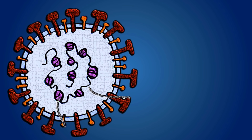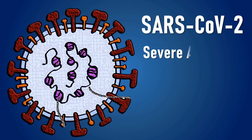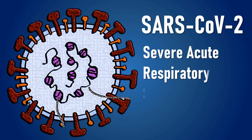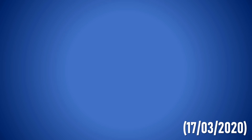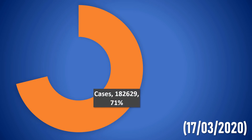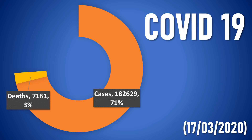The causative agent for this outbreak is named SARS-CoV-2, Severe Acute Respiratory Syndrome Coronavirus 2. According to the World Health Organization, as of March 17, 2020, there have been 1,082,629 cases of COVID-19 and 7,601 deaths.